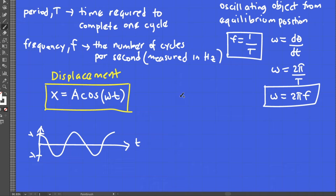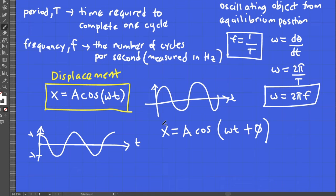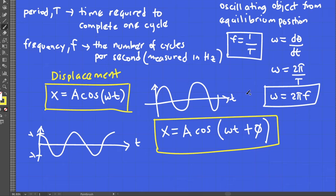In experiments, sometimes the displacement does not coincide at the maximum — the graph is sometimes shifted away from the maximum displacement or amplitude. To correct the equation for displacement, we just need to add a phase phi for the phase shift. So the more general expression for displacement is x equals A cosine of omega t plus phi. Even if we add a phase shift in the argument of cosine, the period, frequency, and amplitude remain the same.